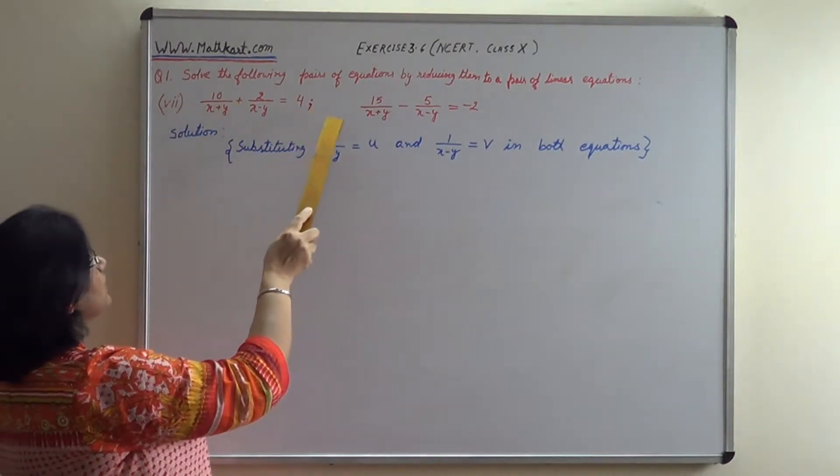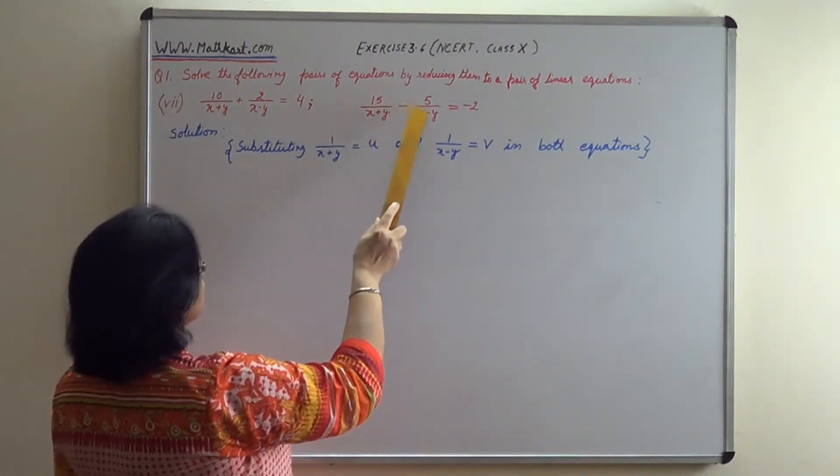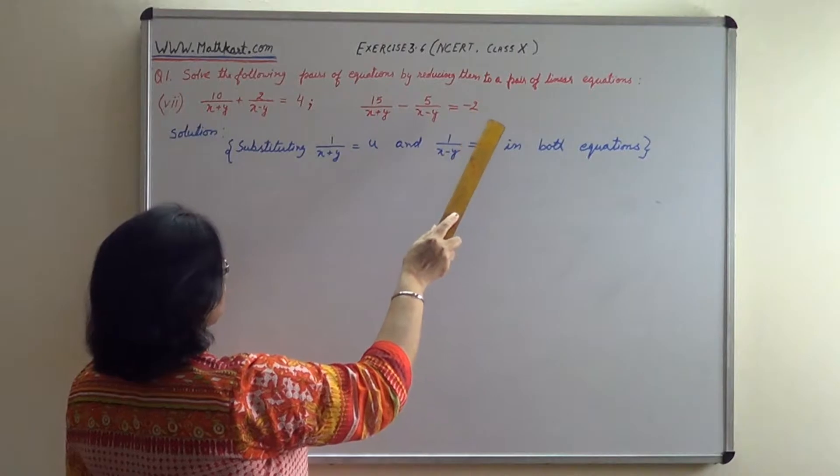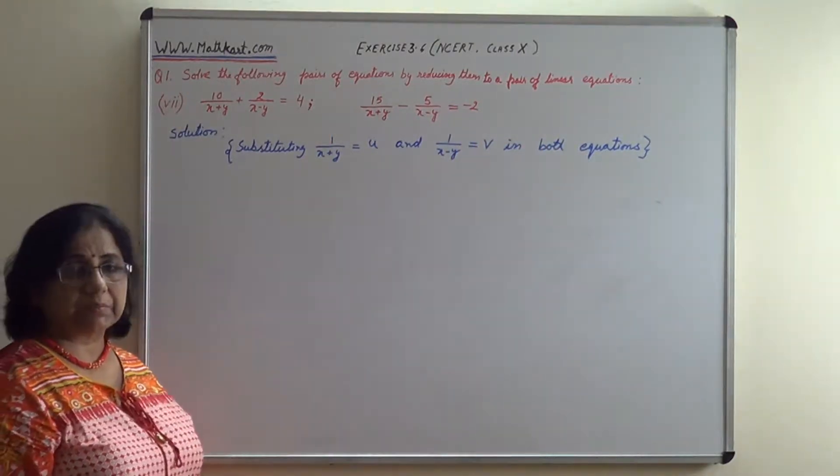The question is, solve the following pairs of equations by reducing them to a pair of linear equations. This question is 8 parts. This video is 7th part.